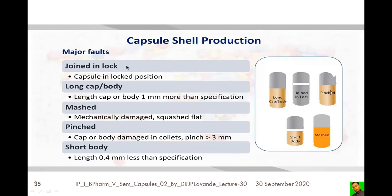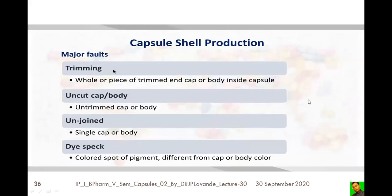Further faults include: pinch — a mechanically damaged, squashed flat portion of the capsule; match — a mechanically damaged or squashed flat area of more than 3 mm; and short body — where the length of the cap or body is less than 0.4 mm below the specified length.